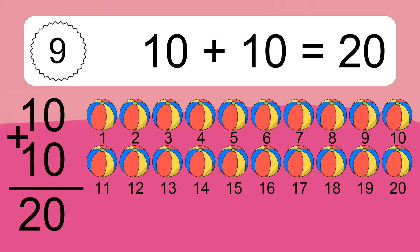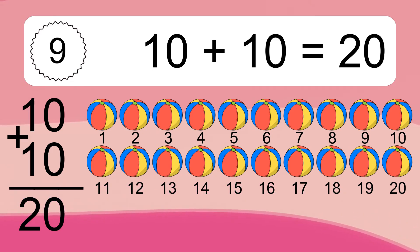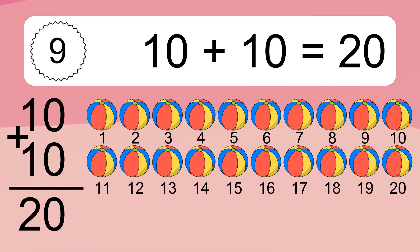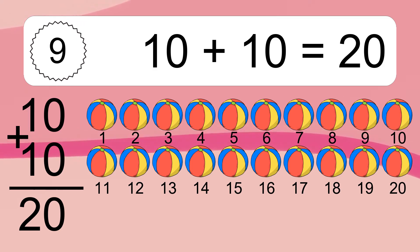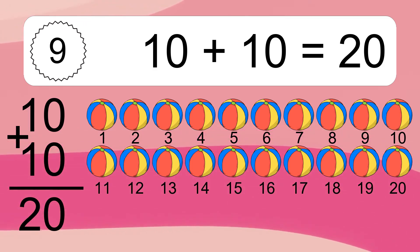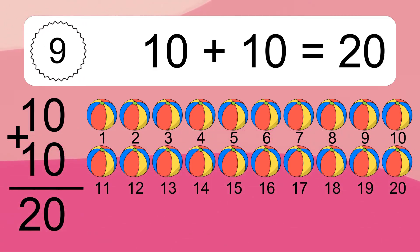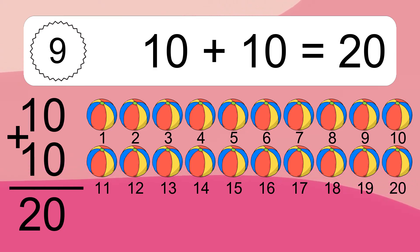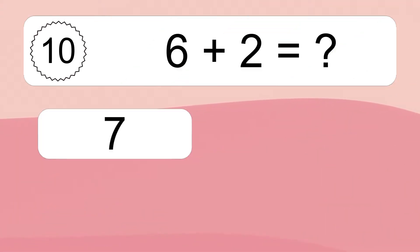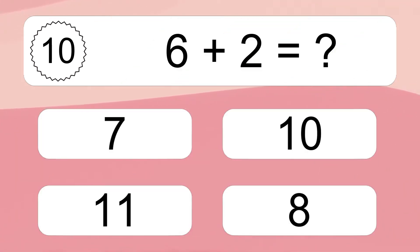2, 3, 4, 5, 6, 7, 8, 9, 10, 11, 12, 13, 14, 15, 16, 17, 18, 19, 20. 6 plus 2 equals what?